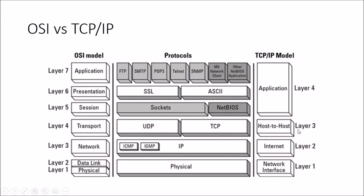The transport layer remains as-is in the TCP/IP model, called the host-to-host layer, with protocols like TCP present in both models. Then the session layer, presentation layer, and application layer from OSI come together as a single application layer in the TCP/IP model, combining all protocols from those three OSI layers into one.